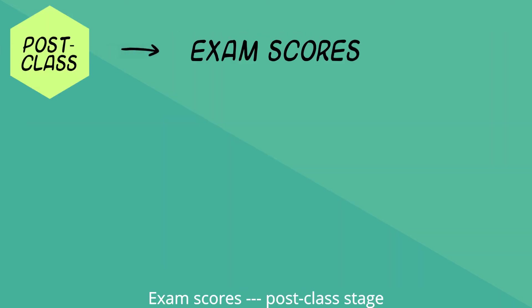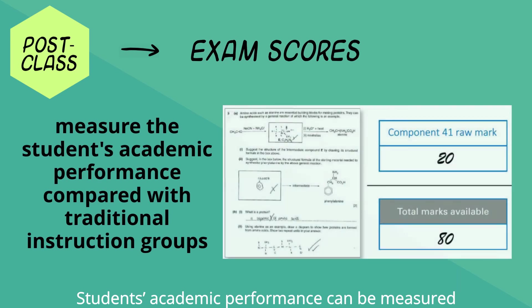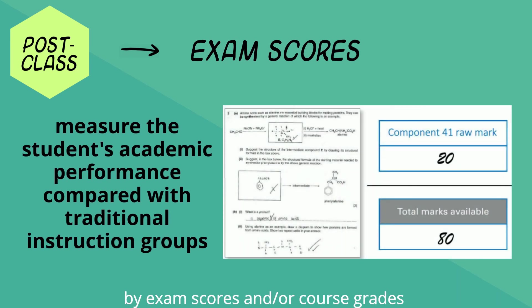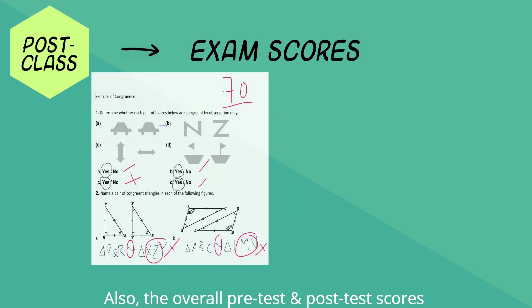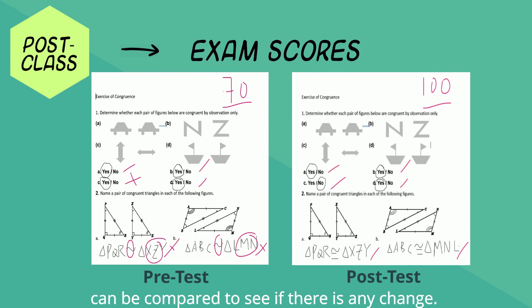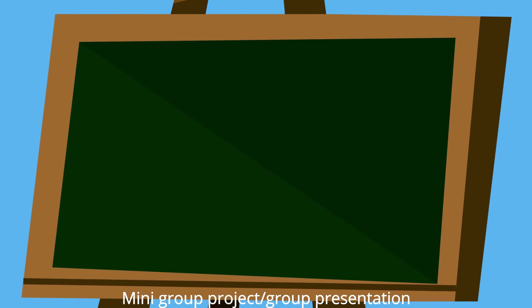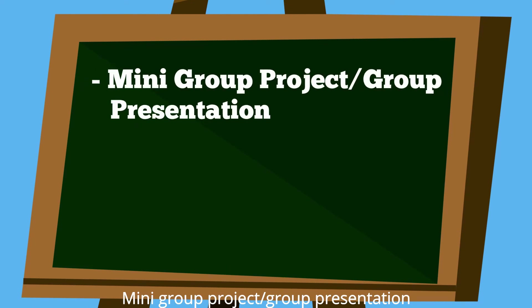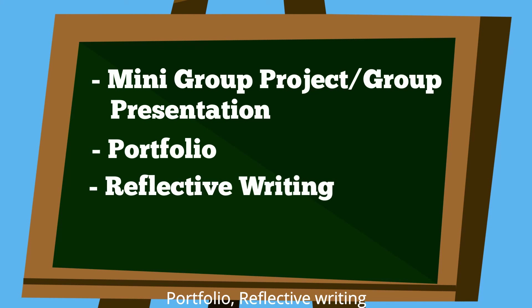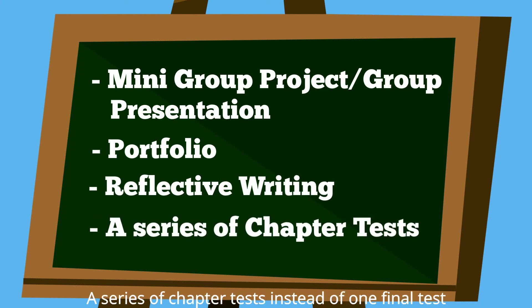Exam scores: Students' academic performance can be measured by exam scores and/or course grades compared with traditional instruction groups. Also, the overall pre-test and post-test scores can be compared to see if there is any change. There are other alternatives to evaluate students' learning outcomes: mini-group projects or group presentation, portfolio, reflective writing, or a series of chapter tests instead of one final test.